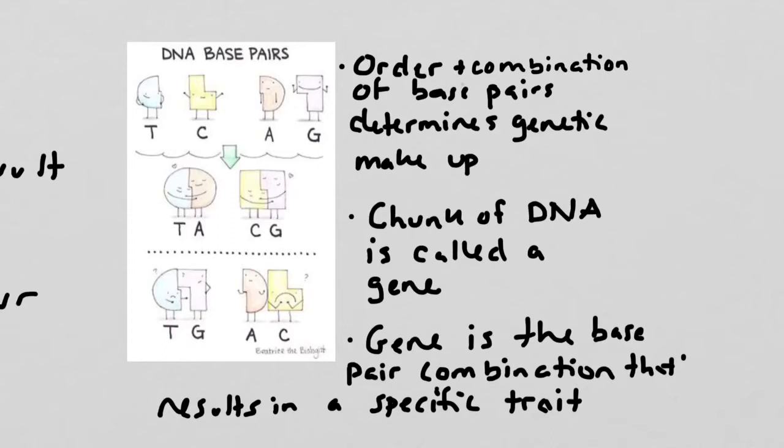So if you have one combination of base pairs, you might end up with red hair, but if you had a different combination of base pairs, you might end up with blonde hair.